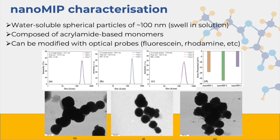The particles are typically between 50 and 150 nanometers and clearly spherical. For sensing or drug delivery applications, one of the big advantages when working with molecular imprinted polymers is that we can embed extra functionality in there. We can use optical probes — fluorescein is commonly used — or rhodamine, or add redox probes such as ferrocene to give different functionality to the material. This is another big advantage compared to natural receptors, as you can easily modify these materials, typically using EDC-NHS coupling since these materials contain carboxylic acids and amine groups.